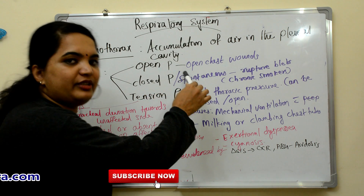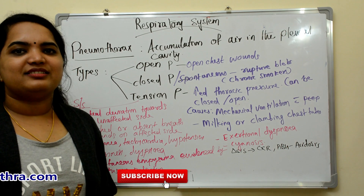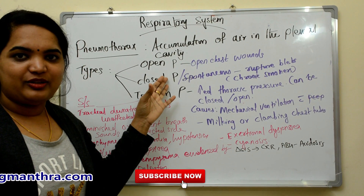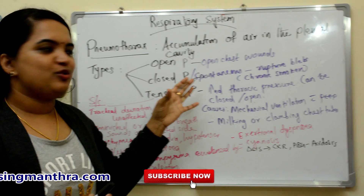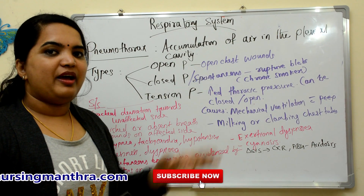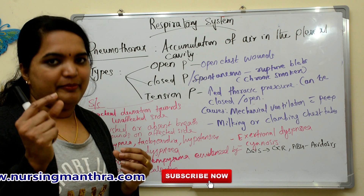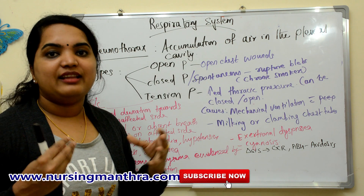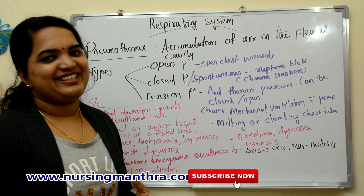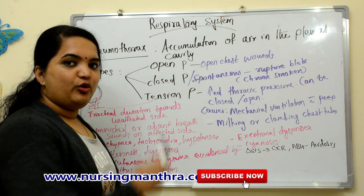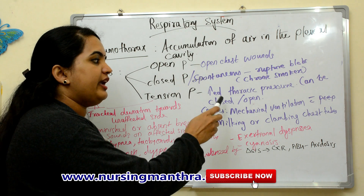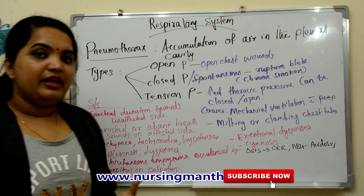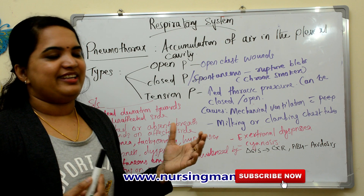Open pneumothorax is caused by open chest wounds. Closed pneumothorax, or spontaneous pneumothorax, is caused by the rupture of blebs inside the lungs — we can see that in chronic smokers. Tension pneumothorax is due to increased thoracic pressure, and it can be closed or open pneumothorax.